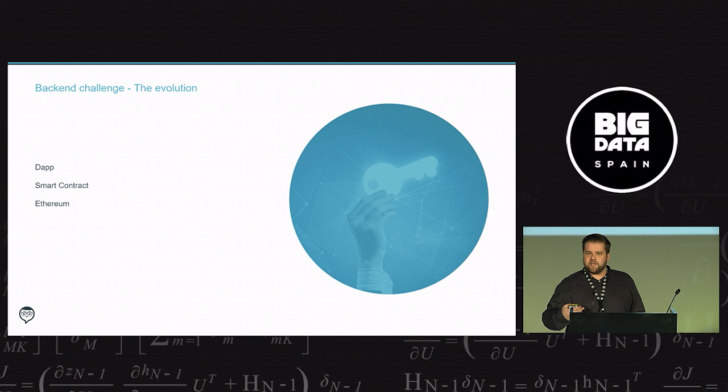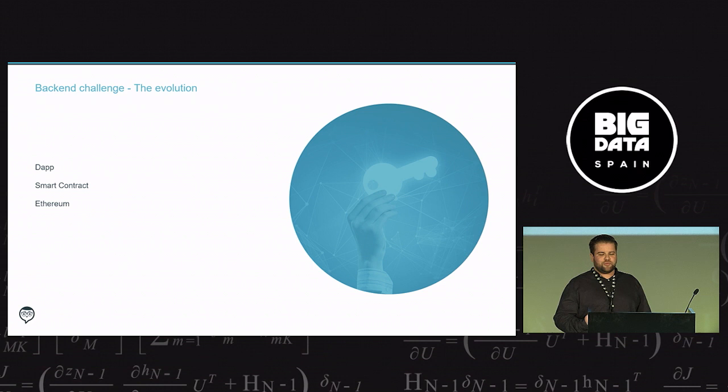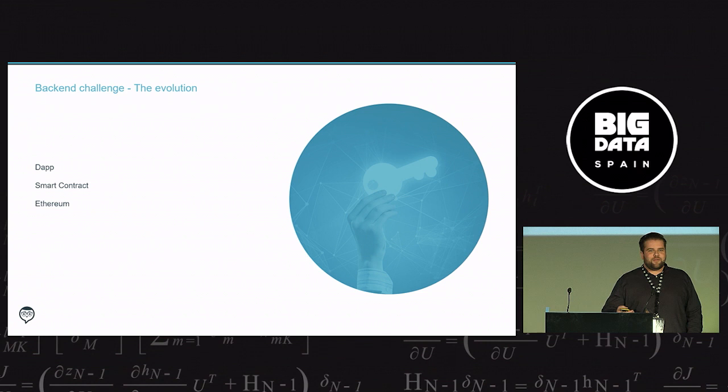First, we considered, because we are working with blockchain technologies, developing a D-app, a decentralized app. Who knows what is a D-app or decentralized app? Nobody? Okay. A decentralized app is a backend code running on a decentralized peer-to-peer network. In our case, Ethereum network. This means that the backend is composed by smart contracts and a front-end. Who knows what is a smart contract in Ethereum? Oh, one? Thank you. It's the way that Ethereum have to run code inside the network.